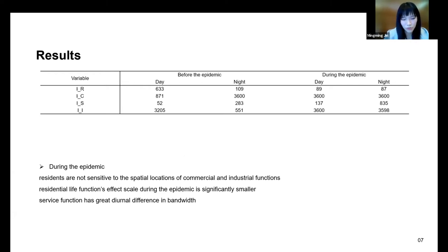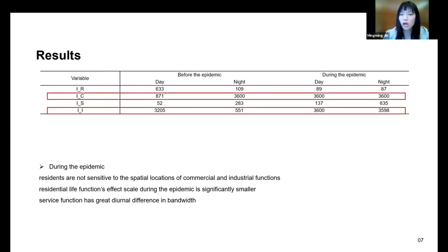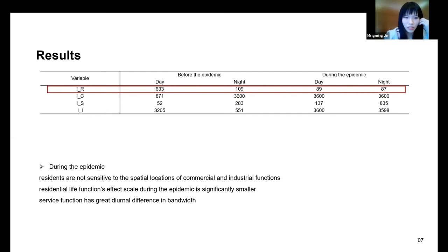Table 1 shows a significant difference in bandwidth of function variables before and during the epidemic. The spatial scale of industrial and commercial functions during the epidemic becomes the global scale, showing that there is no spatial heterogeneity and that residents are not sensitive to the location of commercial and industrial functions during the epidemic. The impact of living function during the epidemic is significantly smaller, according to about 2.4% of total samples. Almost all urban function variables have smaller diurnal variation in bandwidth during the epidemic except for service functions.